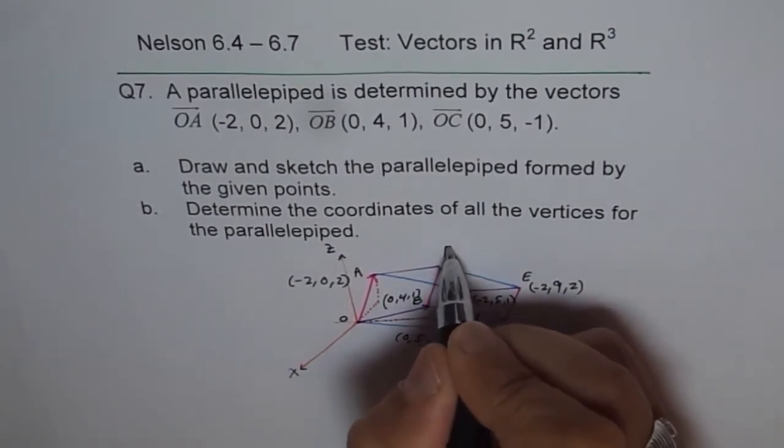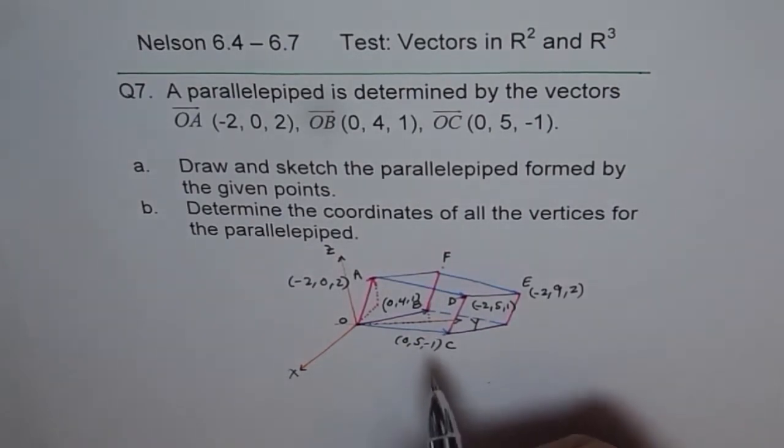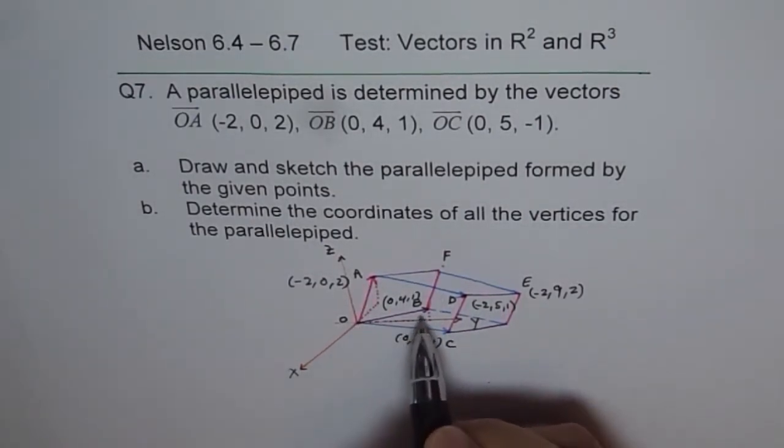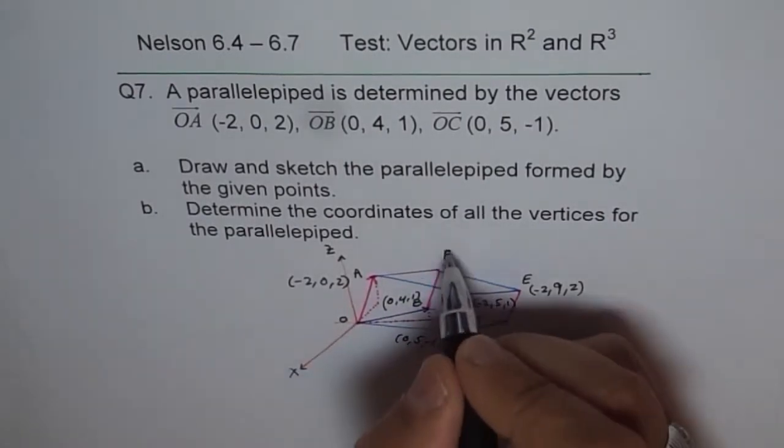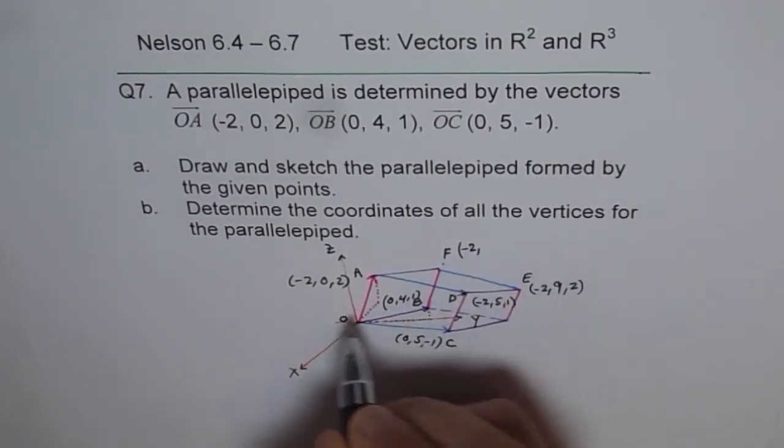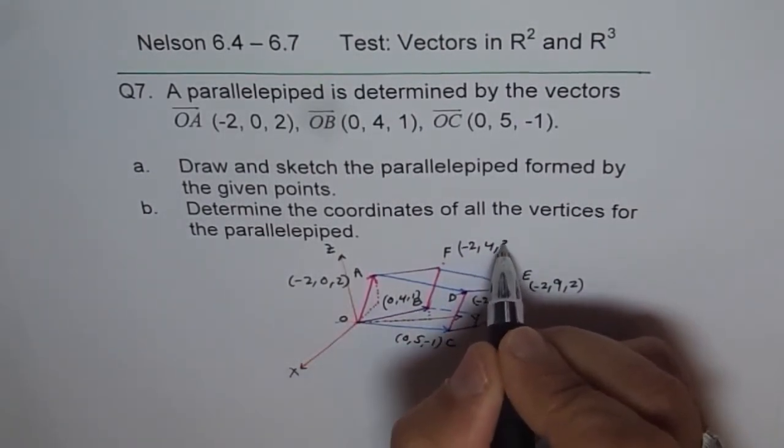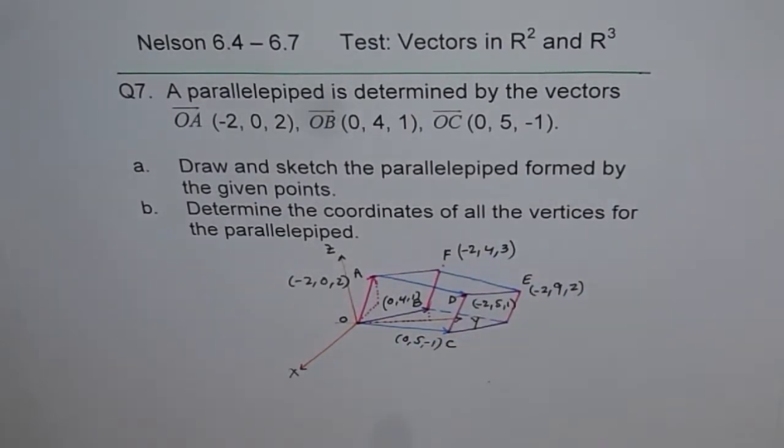Let us go to F. Now, point F we can get by joining OA and OB. This line is parallel to OB, so when we add them up we get (-2, 4, 3). So we get the point F.